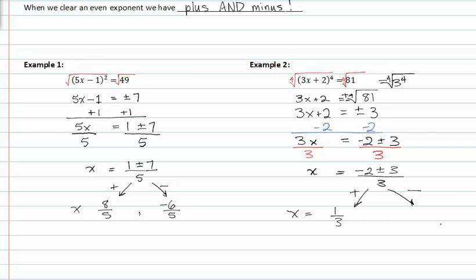My negative option would be negative two minus three or negative five-thirds.